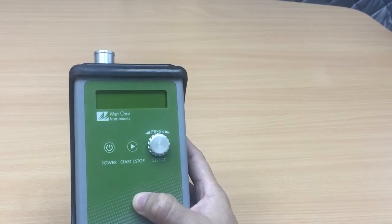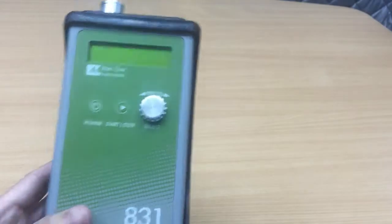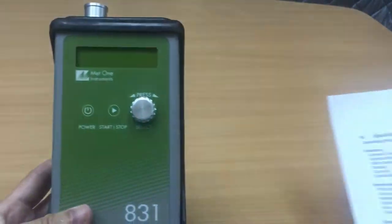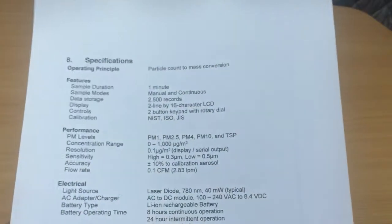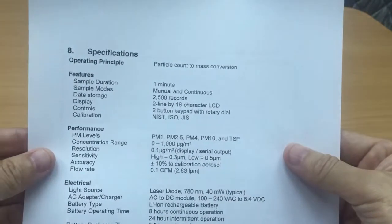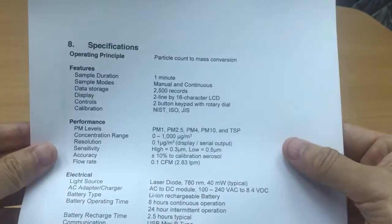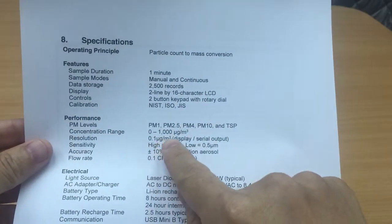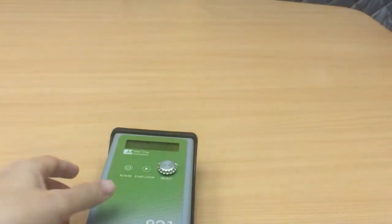So basically we have a dust monitor in my hand and the specification for this 831 is available on the internet but we can count up to about 1 milligram or 1000 micrograms per cubic meter.